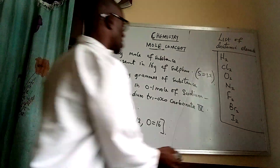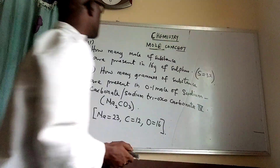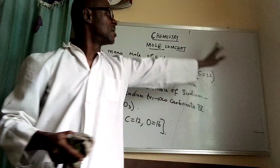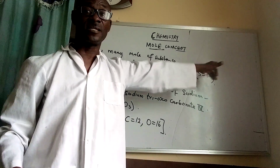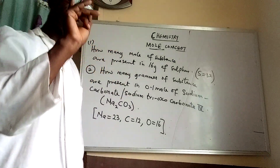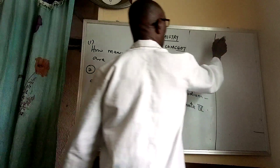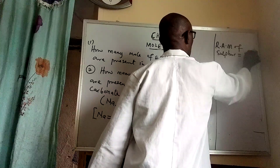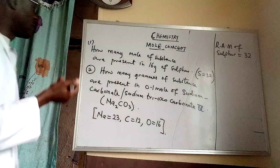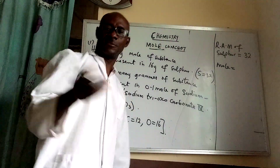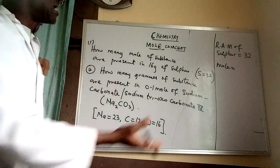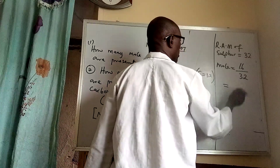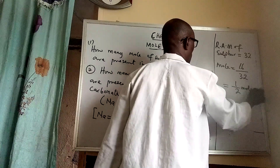Let's look at the solution to question one: find the number of moles present in 16 grams of sulfur. Sulfur is an element and is not among the diatomic elements, so it exists as a single atom. The relative atomic mass of sulfur is 32. Therefore, mole = mass / relative atomic mass = 16 / 32 = 1/2 mole.